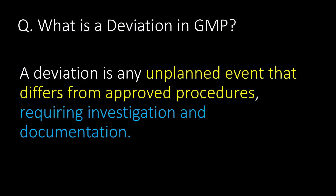What is a deviation in GMP? A deviation is any unplanned event that differs from approved procedures, requiring investigation and documentation.